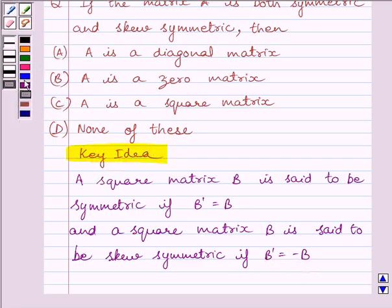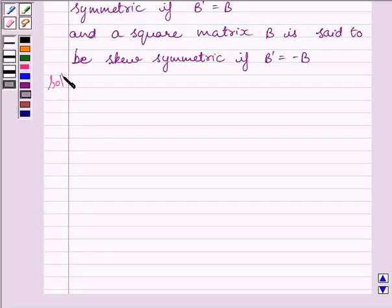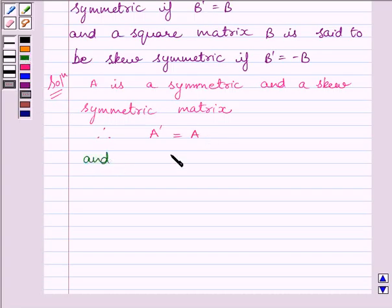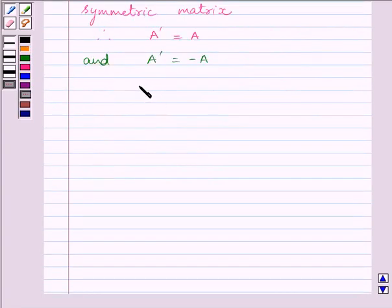Let us now start with the solution. We are given A is a symmetric and a skew symmetric matrix. Therefore A is a symmetric matrix implies A transpose is equal to A, and A is a skew symmetric matrix implies A transpose is equal to minus A, or we can write minus A transpose is equal to A.